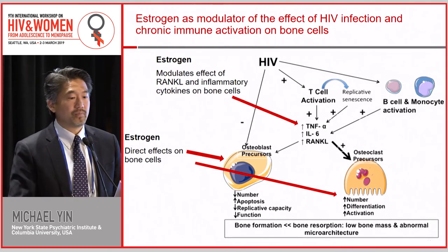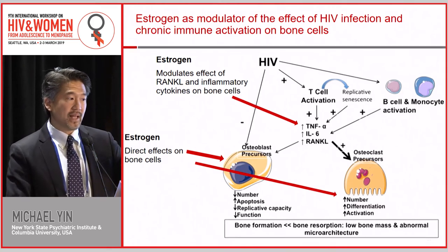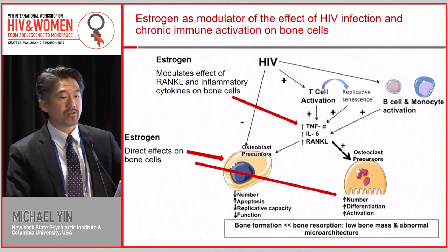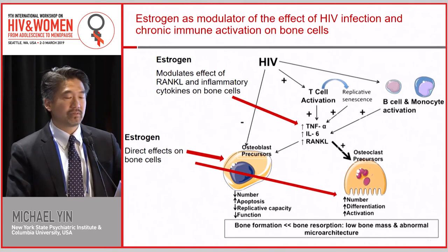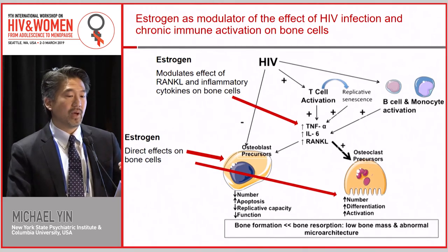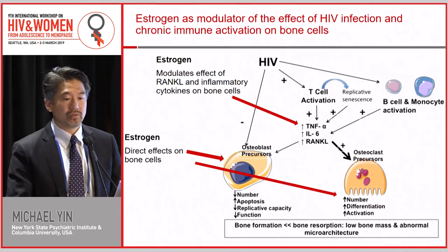Estrogen has direct effects on bone cells, affecting both osteoblasts and osteoclasts, with a net effect of inhibiting resorption and maintaining bone formation. It also modulates the effect of cytokines on bone cells. When people are premenopausal they have this protective effect of estrogen, and when they lose it, the effect may be even more profound in those who have a background of chronic inflammation such as HIV, because you lose estrogen's modulation of inflammatory markers on bone cells.